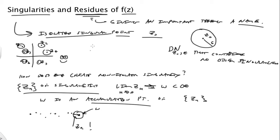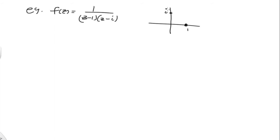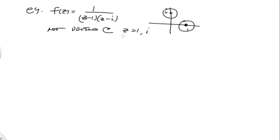What kind of functions are we talking about with singularities? Consider a function like F of Z equal to 1 over (Z minus 1)(Z minus i). This function has two isolated singularities — one at Z = 1 and another at Z = i. They're isolated because we can draw little disks around them. The function is not defined at Z = 1 or Z = i, and that's what we mean by a singularity of a function.